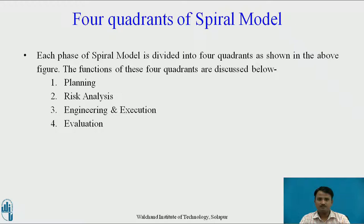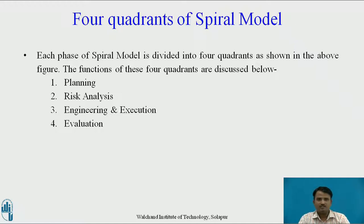The spiral model is similar to the incremental model, with more emphasis placed on risk analysis. It has four phases: Planning, Risk Analysis, Engineering, and Evaluation. A software project repeatedly passes through these phases in iterations called spirals. In the Planning phase, requirements are gathered, including BRS (Business Requirement Specifications) and SRS (System Requirement Specifications).